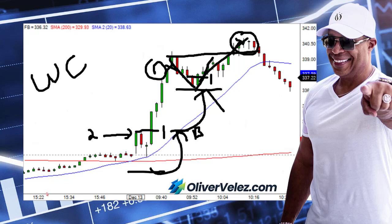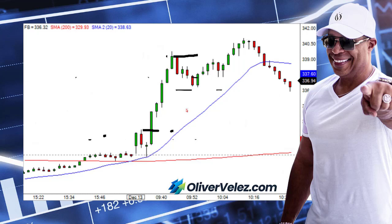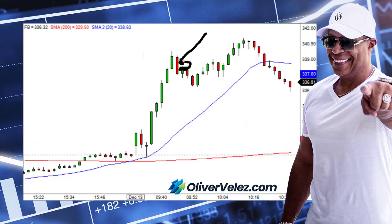Notice there was no moving average stop used there — no moving average stop. Now there are some nuances we should cover. You see this bar here — I don't want you buying next to a fat bar. Let's say you got a buy signal right there, but you're too close to a fat bar.